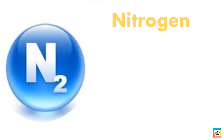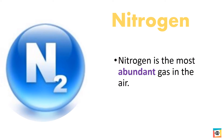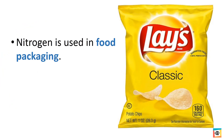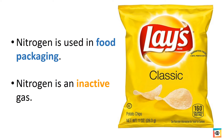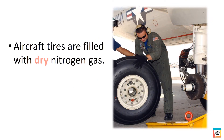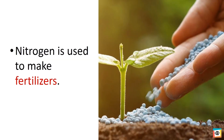Nitrogen is also a gas present in the air. Nitrogen is the most abundant gas in the air, meaning it is present in the largest amount. Nitrogen has many uses. It is used in food packaging because it is an inactive gas — it does not react with food, so our food stays fresh. Aircraft tires are filled with dry nitrogen gas. Nitrogen is also used to make ammonia, which is used in making fertilizers.